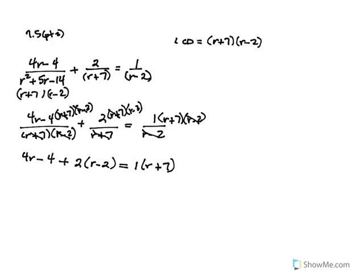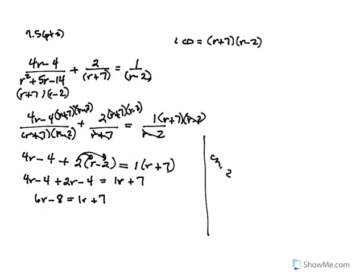1 times R plus 7. So 4R minus 4 plus — we're going to distribute — and then we try to combine like terms. So 6R minus 8 equals 1R plus 7. There are no exponents present, so I'm just using chapter 2 rules. Once you've cleared the fractions, everything after that is essentially prerequisite material for this problem.